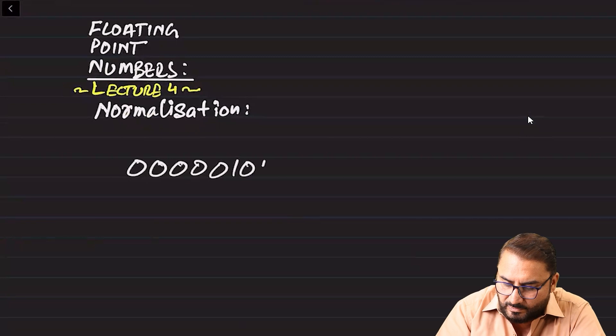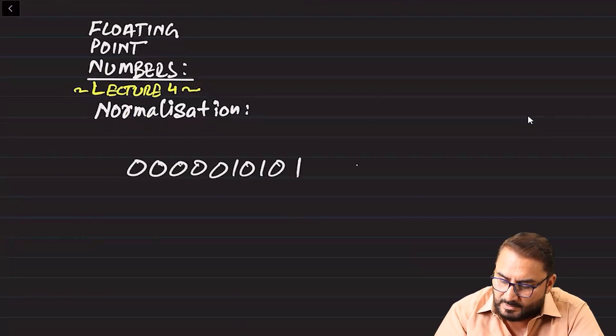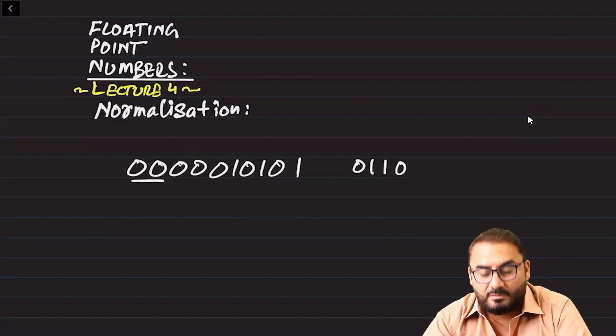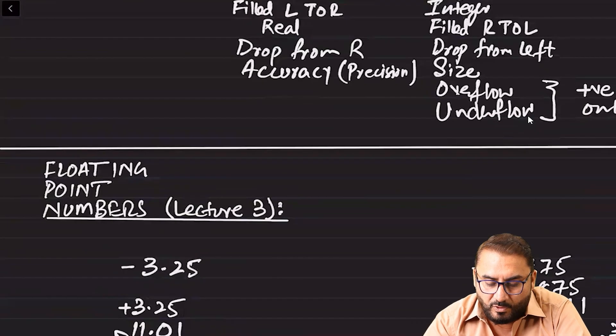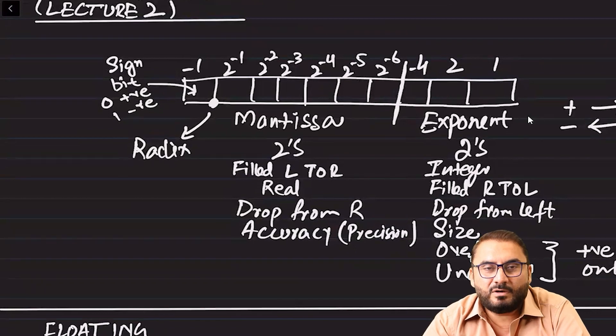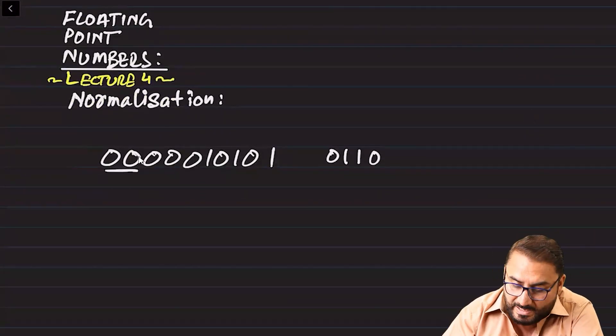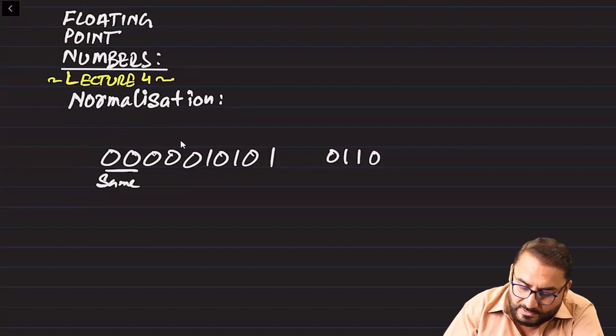If a floating-point number in binary form does not match the normalization rules, we have to adapt a strategy to bring it to the required level — that strategy is called normalization. Let's see why a number might not be considered normalized. For example, take the number 0 0 0 0 0 1 0 1 0 1 and exponent 0 1 1 0. You can see the first two bits are the same. In every floating-point number we've used until now, the first two bits were different. Same first two bits in the mantissa means the number is not normalized.